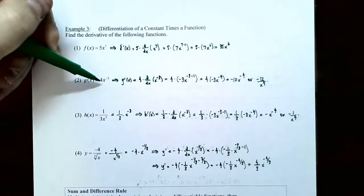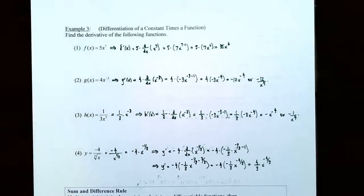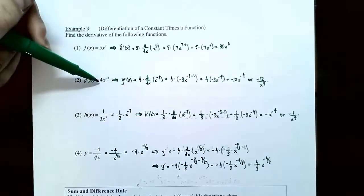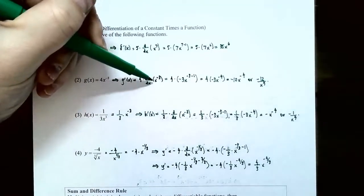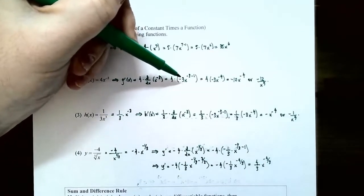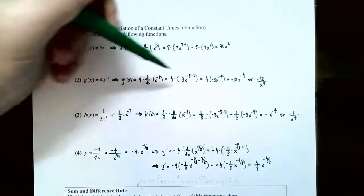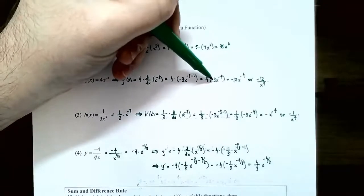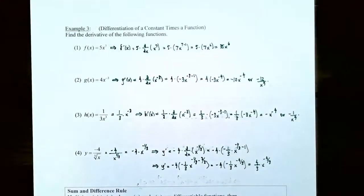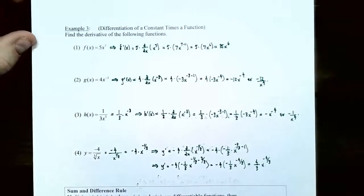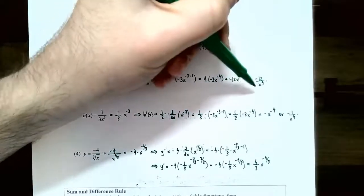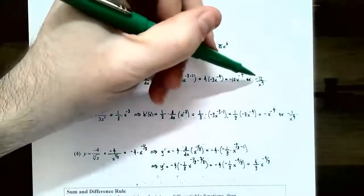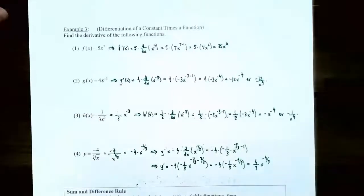Number two, g of x equals 4x to the negative 3. You have a constant 4 and a power function x to the negative 3. The derivative g prime of x: keep the constant 4, and take the derivative of x to the negative 3 — bring the negative 3 down, keep x, subtract 1 from the exponent to get negative 3 minus 1. So 4 times negative 3 x to the negative 4. Multiplying the coefficients: negative 12x to the negative 4, or equivalently negative 12 divided by x to the 4th.